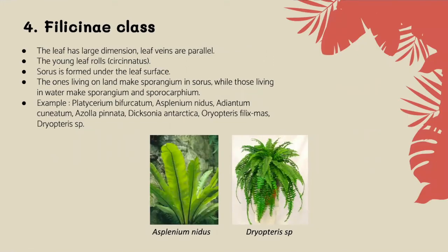Next is Filicophyta. The leaf has a large dimension and leaf veins are parallel. The young leaf rolls up, or is circinate. Sori are formed under the leaf surface. Those living on land make sporangia in sori, while those living in water make sporangia in sporocarps. Examples include Platycerium bifurcatum, Asplenium nidus, Adiantum cuneatum, Azolla pinnata, Dicksonia antarctica, Dryopteris filix-mas, and Nephrolepis aspects.